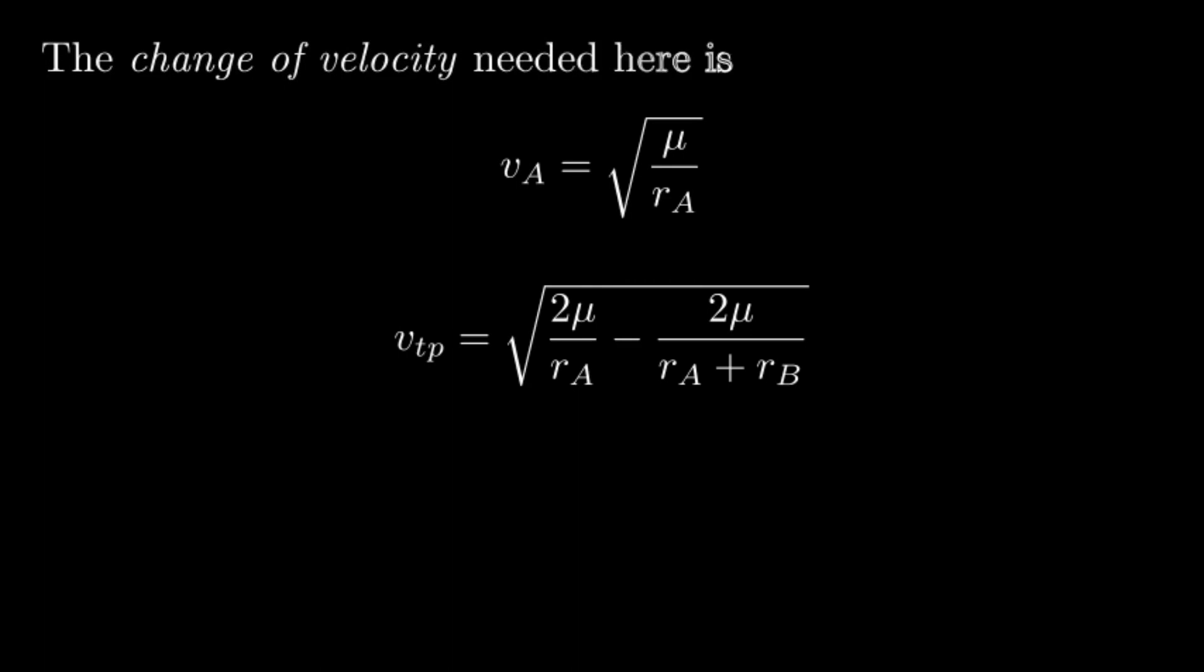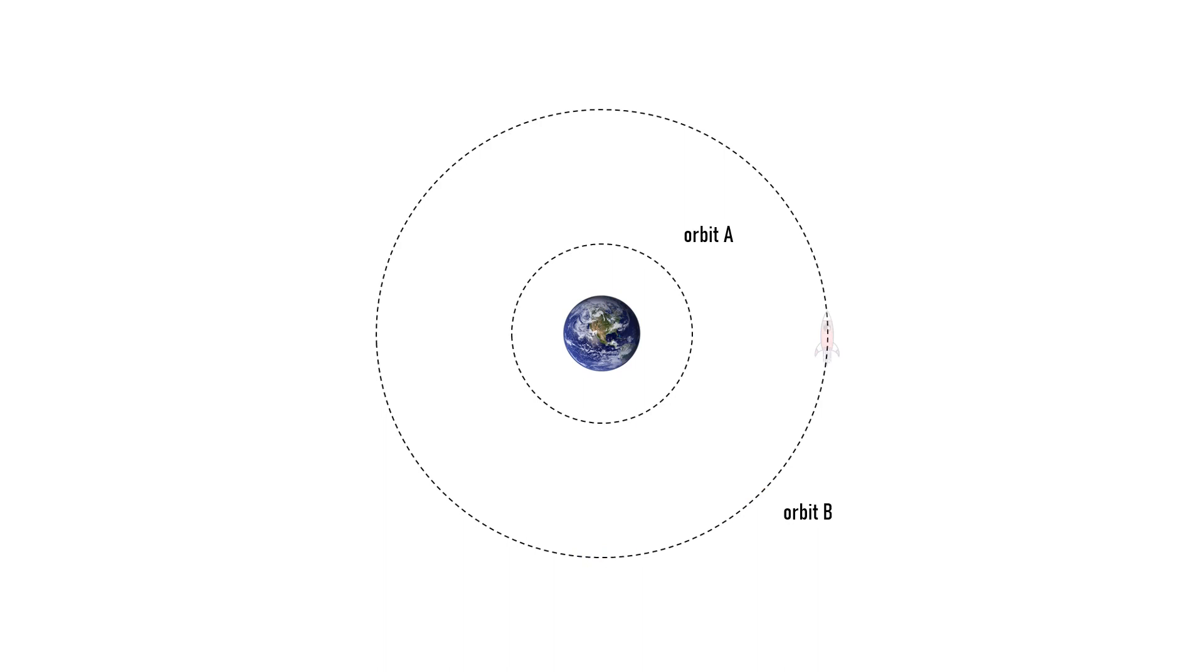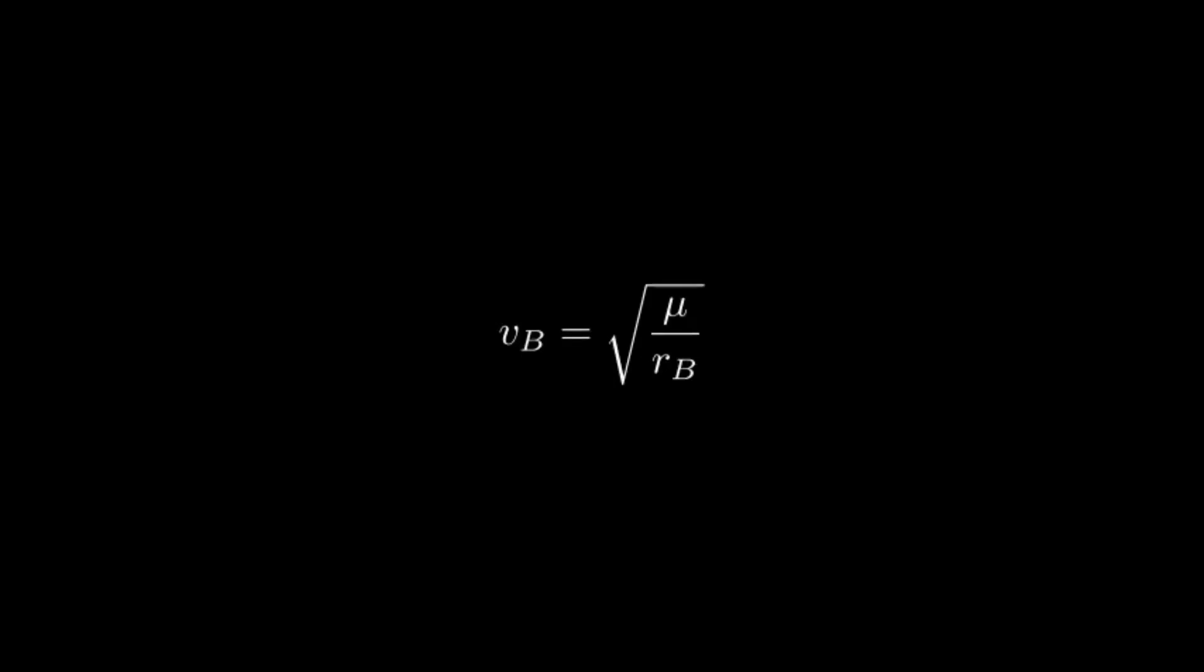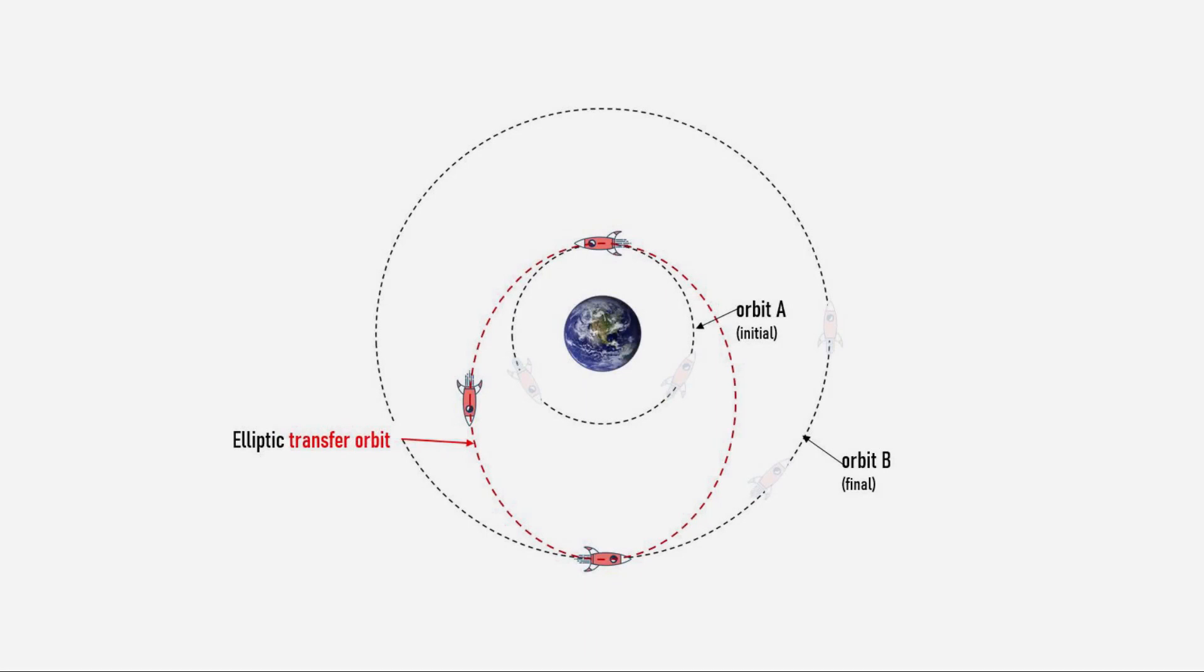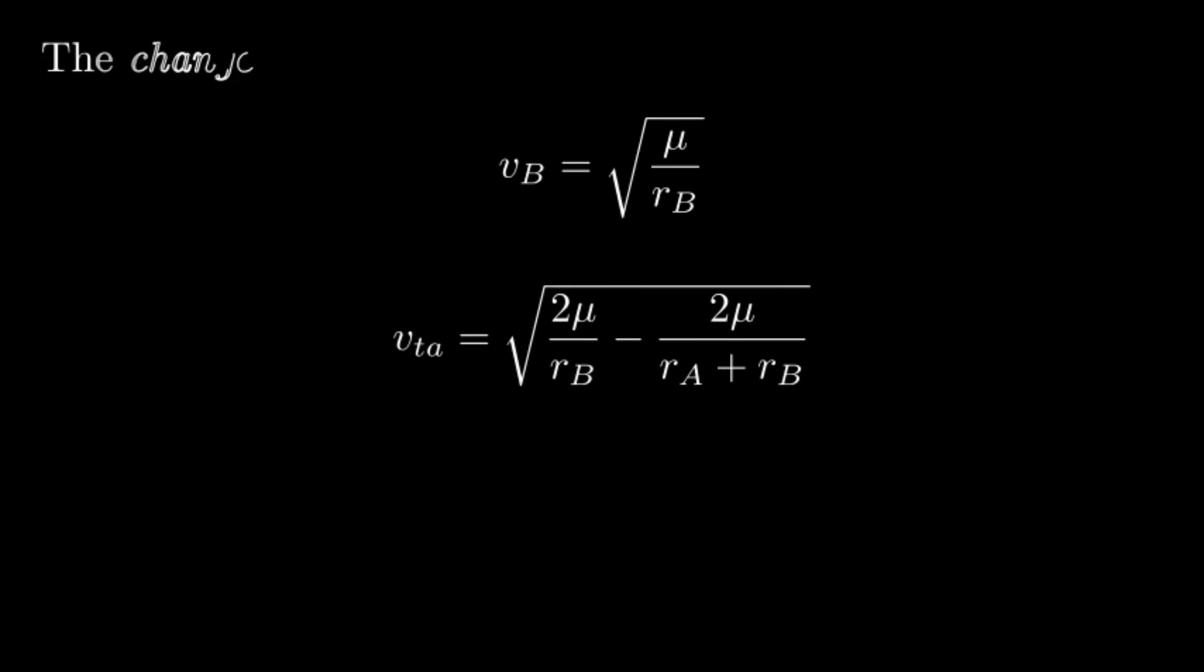Now delta v1 is just the absolute difference between these two values. We use the same method to calculate the second delta v. We also know the orbital speed of the circular orbit B. We know the spacecraft at the apogee point has a speed. Therefore, delta v2 is just the absolute difference between these two values.